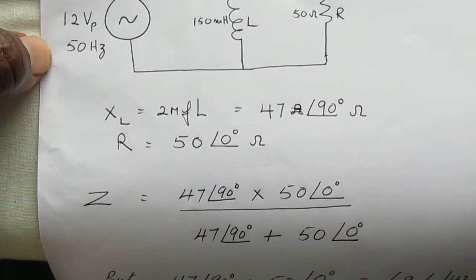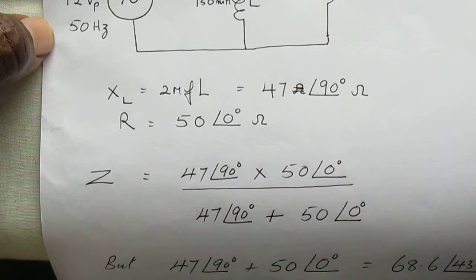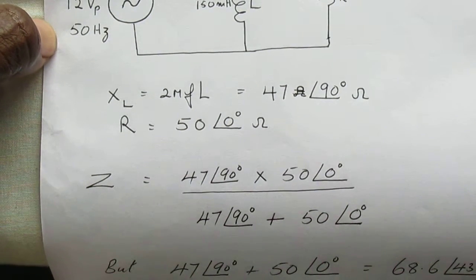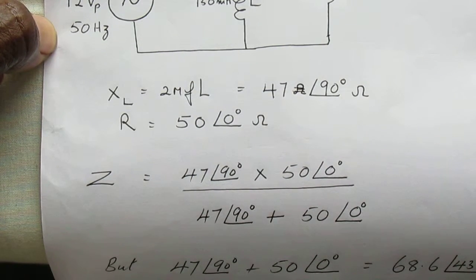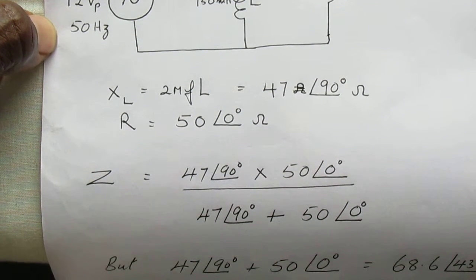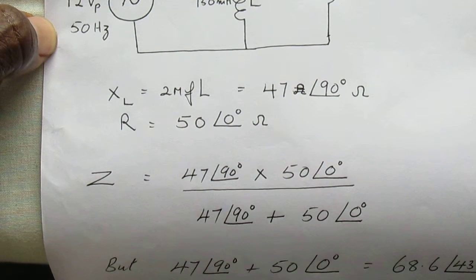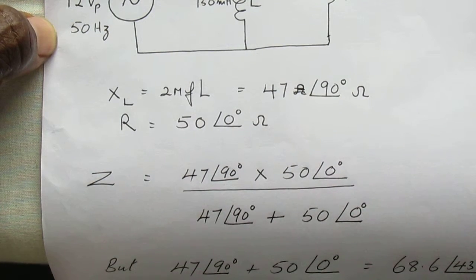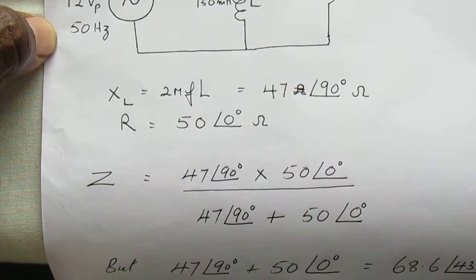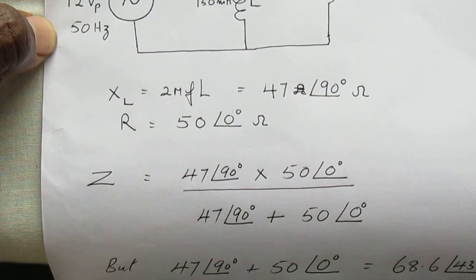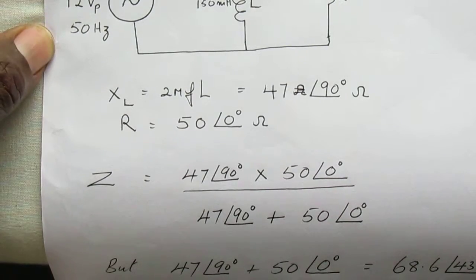Now the impedance of the parallel circuit using the parallel formula R1 times R2 over R1 plus R2, following the same method you use for DC circuit analysis. You get 47 angle 90 ohms multiplied by 50 angle 0 ohms divided by 47 angle 90 plus 50 angle 0 ohms.